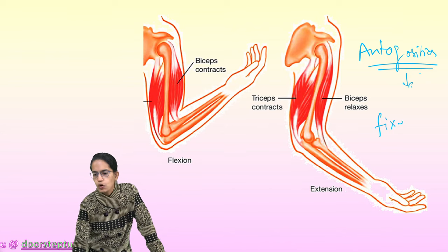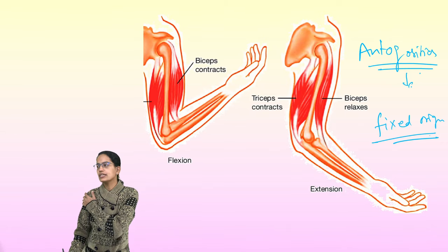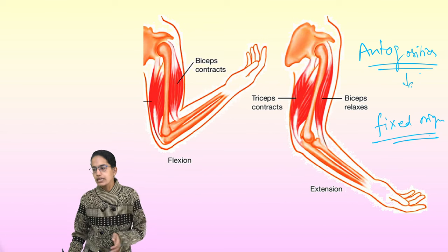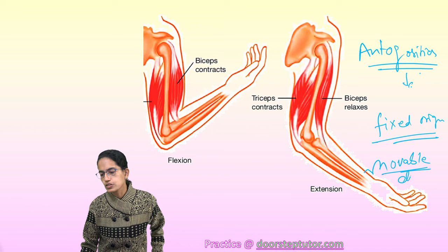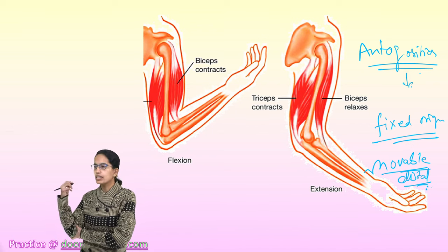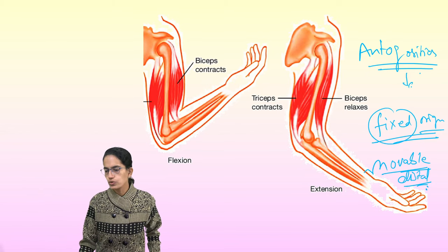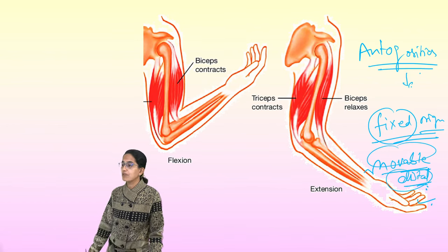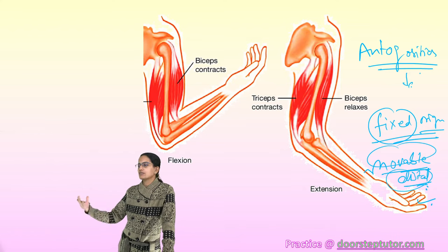A muscle has two important ends. One is the fixed end or origin — the proximal end — where the muscle is immovable. The other end is the movable end, known as the distal end, where movement actually takes place. When stimulated by a nerve, the muscle contracts and pulls the bone as required.